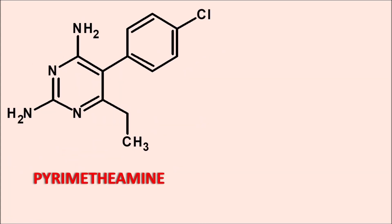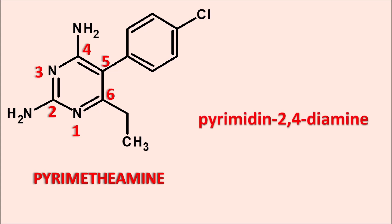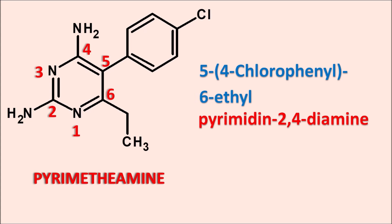Next one is pyrimethamine, which is used as an antimalarial agent. Again you can observe the 2,4-diamine of the pyrimidine ring. Numbering: 1, 2, 3, 4, 5, 6. It is having two side chains at the fifth and sixth positions. The suffix is pyrimidine-2,4-diamine. At the fifth position there is a phenyl ring with a chlorine at the fourth position, so it is 5-(4-chlorophenyl). At the sixth position there is a two-carbon chain, so 6-ethyl. Therefore, 5-(4-chlorophenyl)-6-ethylpyrimidine-2,4-diamine is pyrimethamine.